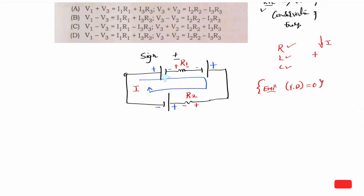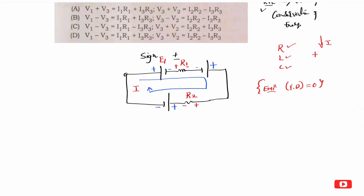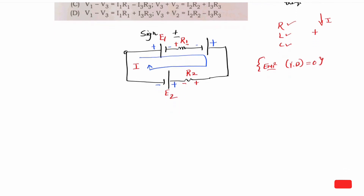If the current enters the positive plate, you can assign E1 and E2. If you travel and enter the positive plate — positive to negative — you can note the voltage drop. Here the current I and E flow through resistance R1. As per Ohm's law, the drop is I into R1. Here the plus terminal is entered and minus is left, so you put plus I into R1.